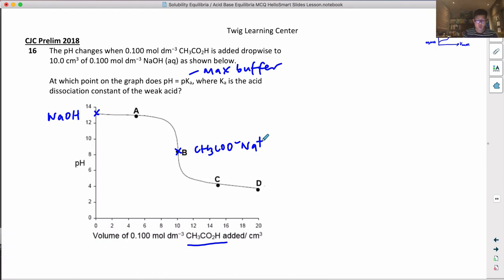So it is a buffer. Initially there's NaOH and at B this is the salt. At A you have equal concentration or equal amount of sodium hydroxide and CH3COO-.